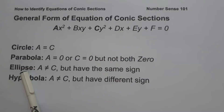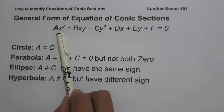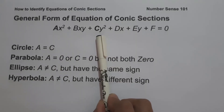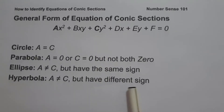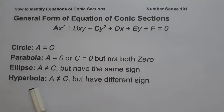And lastly, if the coefficient of x² is not equal to the coefficient of y² but they have different signs, we can say that the given equation is a hyperbola. So these are the basic concepts that you need to remember in order for us to identify the equations of conic sections.